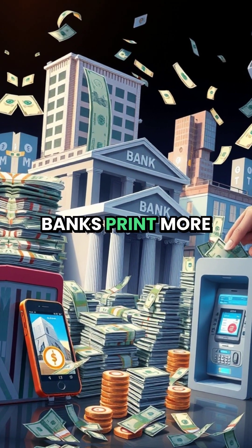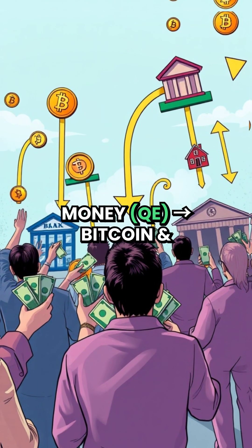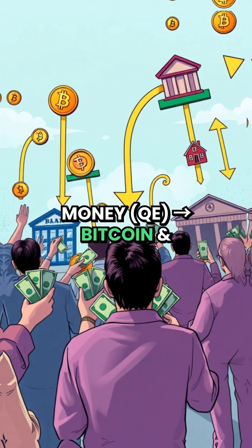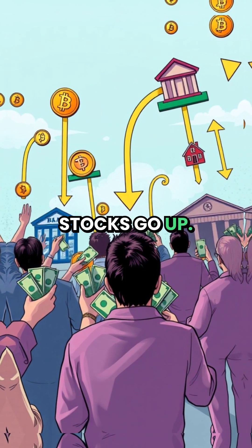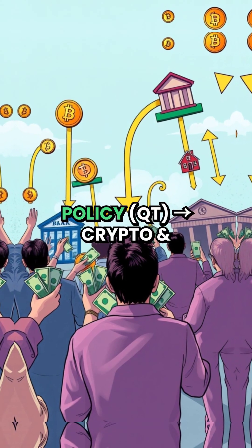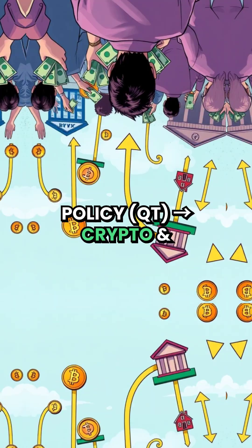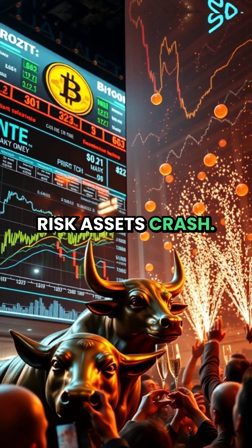When central banks print more money — QE — Bitcoin and stocks go up. When banks tighten policy — QT — crypto and risk assets crash.